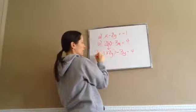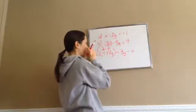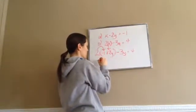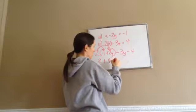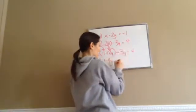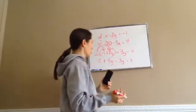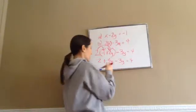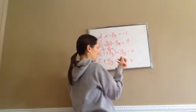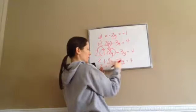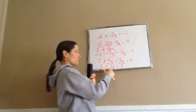The 2 on the outside of the parentheses means we use the distributive property. 2 times negative 1 becomes negative 2, plus 2 times 2y becomes 4y. Bring everything else down: minus 3y equals 4. Now add like terms: 4y minus 3y gives plus 1y. So we have negative 2 plus 1y equals 4.